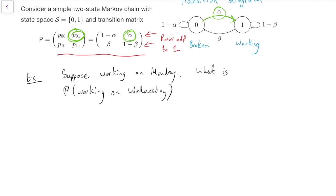Well, if we call Monday day n, then Wednesday is day n plus 2. So what this is asking for is the probability that it's working on day n plus 2, so X_{n+2} equals 1, because we said 1 is the working state, given X_n equals 1.